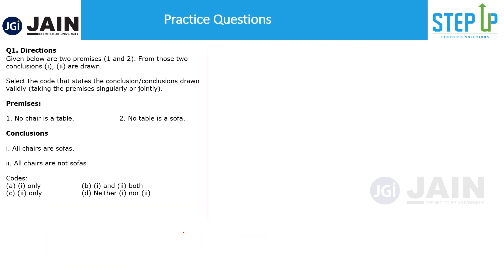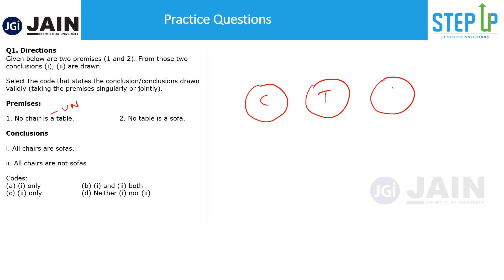Let's solve a few questions. The first problem states: 'no chair is a table' and 'no table is a sofa'. For 'no chair is a table', this is a universal negative statement, so there is only one possibility: two disjoint circles. For 'no table is a sofa', the minimum overlap condition places sofa outside, but sofa could also partially overlap chair, be fully separate, or be inside chair — these are all possible cases.